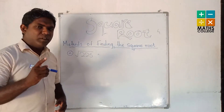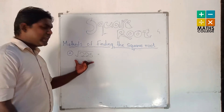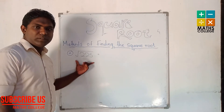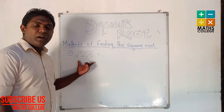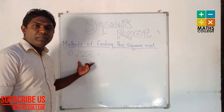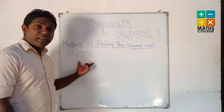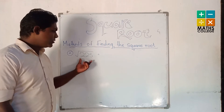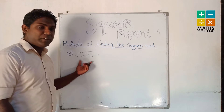We can consider another example: 225. How do we find the square root of 225 by using the product of prime factors?